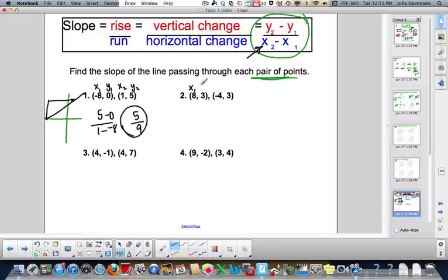Number two. Here's x1, y1, x2, and y2. y2, which is three, minus y1, which is three, over x2, which is negative four, minus x1, which is eight. Three minus three is zero. Negative four minus eight is negative twelve. Zero over negative twelve, that's a zero slope.